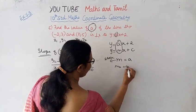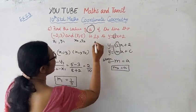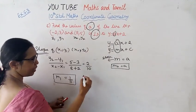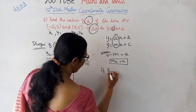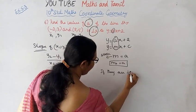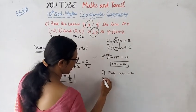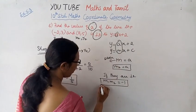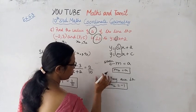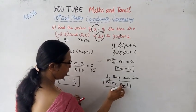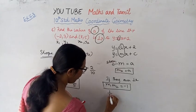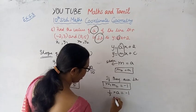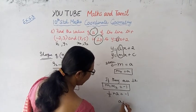M2 equals A. If the two lines are perpendicular to each other, the condition is M1 times M2 equal to minus 1. So M1 is 1 by 5 and M2 is A. Cross multiplying: 5A equal to minus 1.